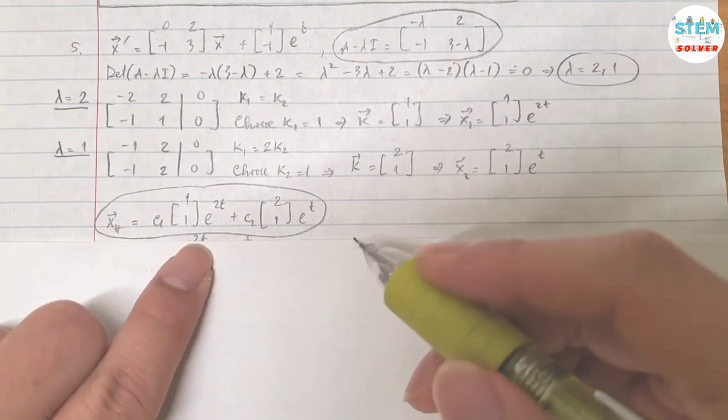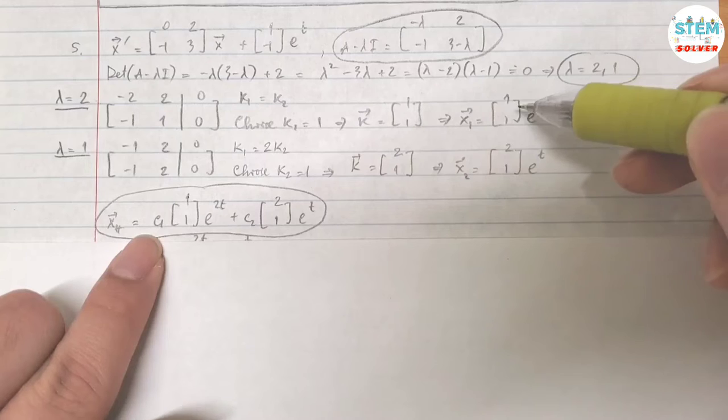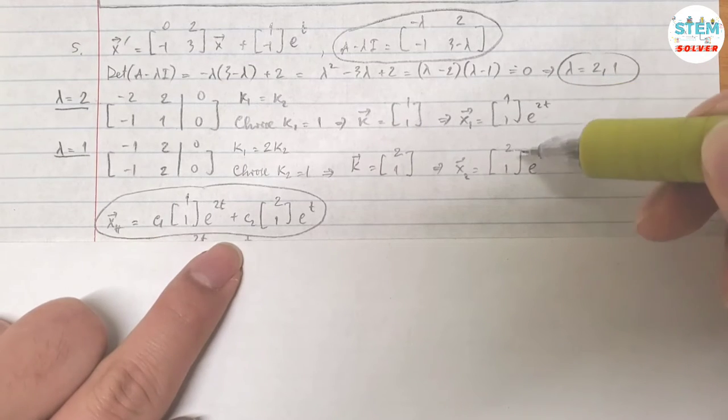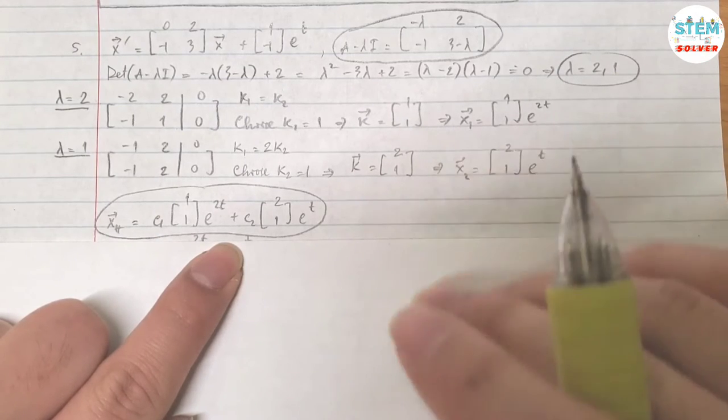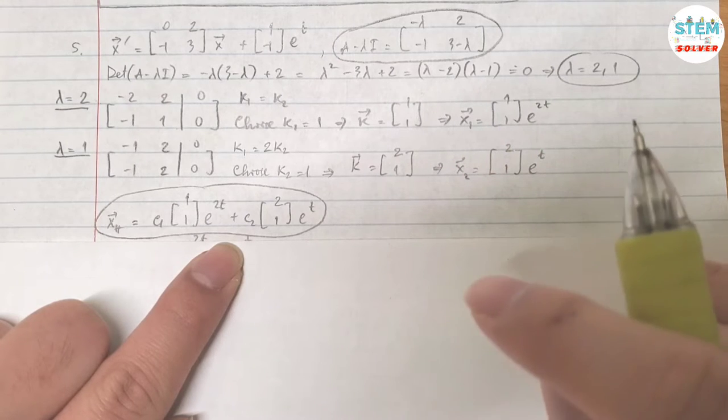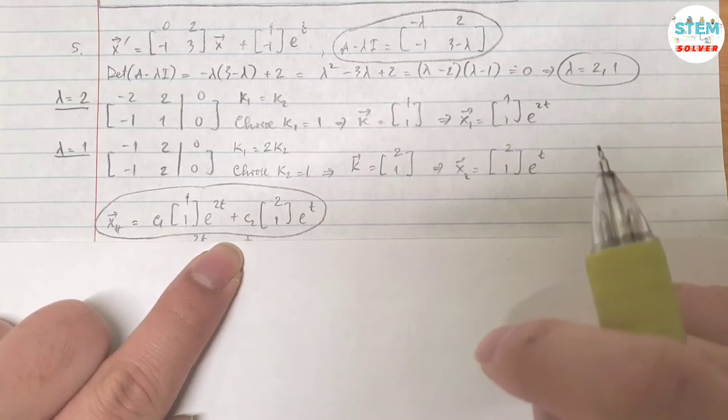So your homogeneous solution is equal to c1 times vector x1 plus c2 times vector x2. That is your homogeneous solution. Now, let's find out what the non-homogeneous solution is.